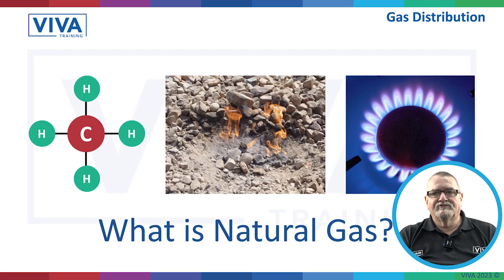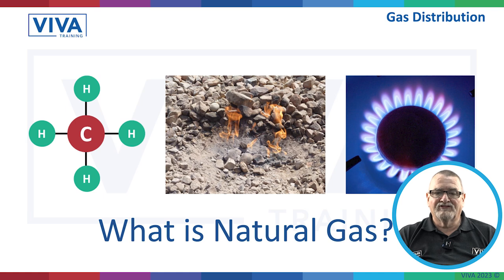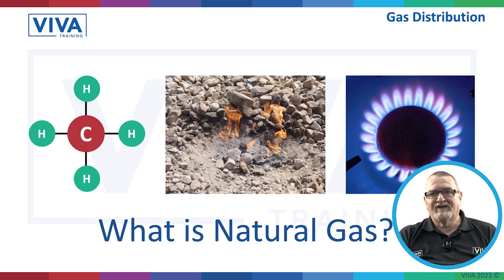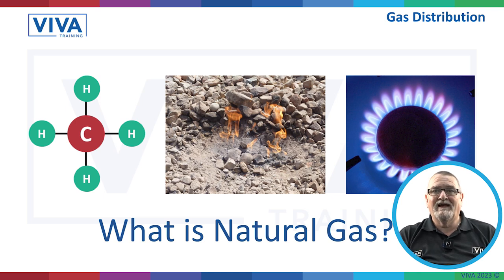So what is natural gas? It's a naturally occurring substance. Its chemical symbol is CH4 — one carbon, four hydrogens. It's a naturally occurring phenomenon. We tap into it, and then we put it through burners, through a distribution network, and it ends up coming through your gas cooker, your gas fire, your gas boiler.